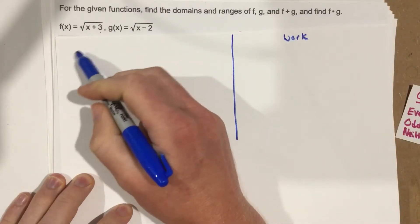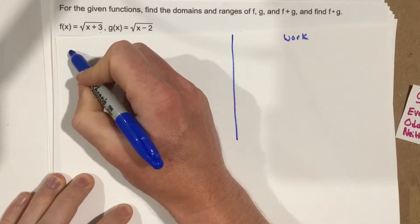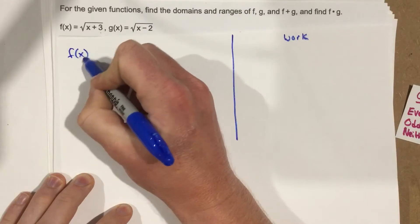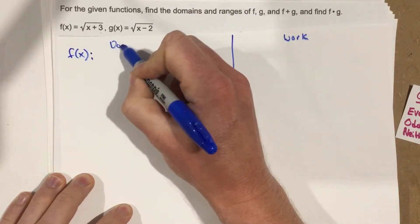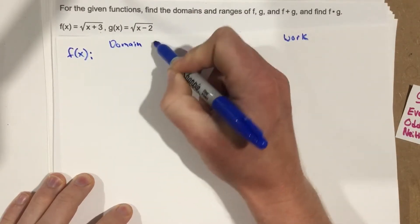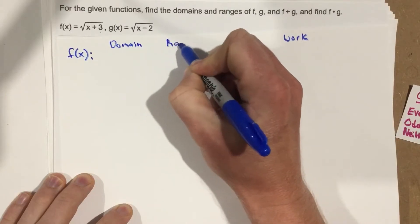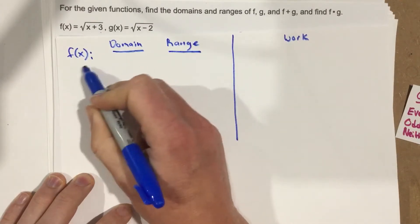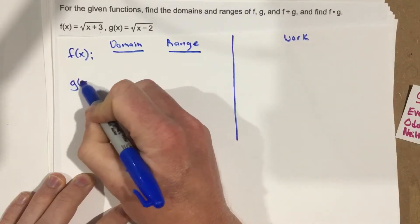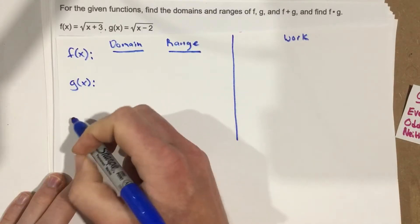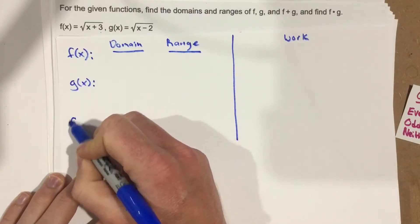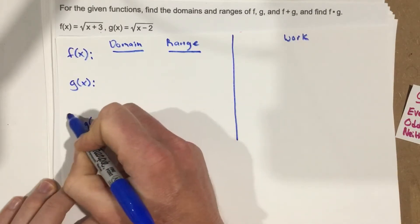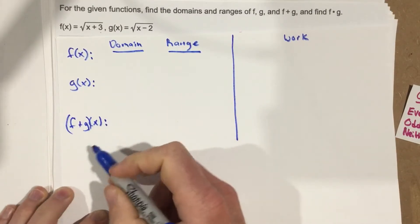On this side I'm going to have my answers. For f of x I'm going to have a domain and a range for each of these functions. So I've got f of x, I'll leave a little space, then g of x, then f plus g of x, and then f times g.